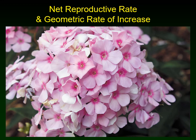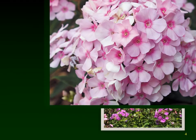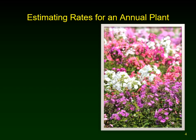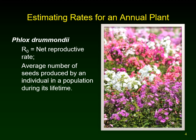The first organism we're going to talk about is one we already discussed when we covered survivorship curves — an annual garden plant called Phlox drummondii. We're going to look at its net reproductive rate and its geometric rate of increase. The net reproductive rate is defined as the average number of seeds produced by one individual plant in the population during its lifetime. This is an annual plant, so its lifetime is exactly one year. It sets seed in the fall, germinates in the spring, spends the winter as a seed, then grows over the summer, flowers, sets seed, and dies.